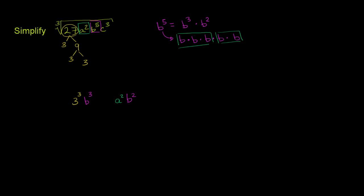And then finally, we have c to the third power. Clearly this is a perfect cube — it is c cubed, c to the third power. So I'll put it over here: c to the third power. And of course we still have that overarching radical sign, so we're still trying to take the cube root of all of this.